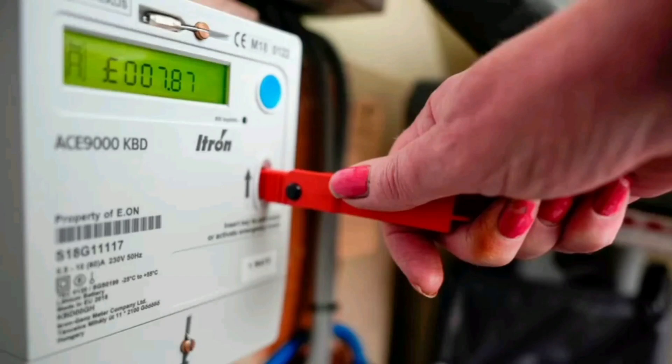According to new regulations from the regulator Ofgem, prepaid energy meters cannot be installed forcibly in the houses of customers who are over 85.